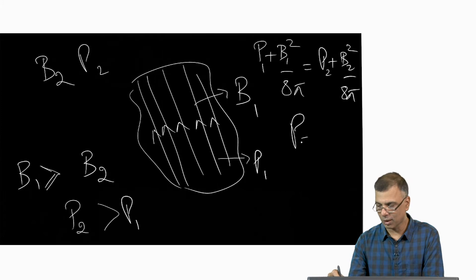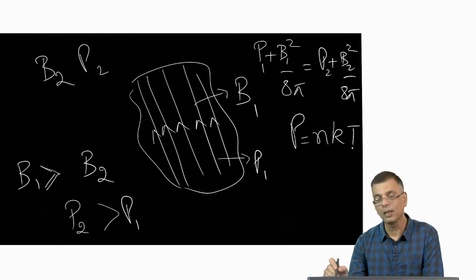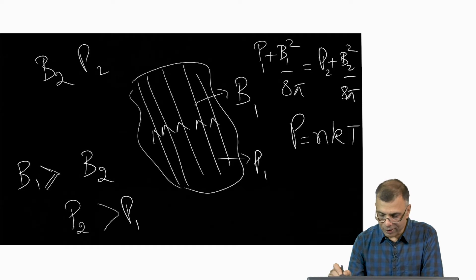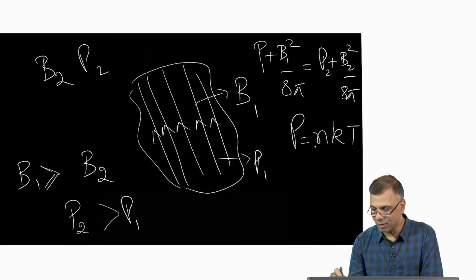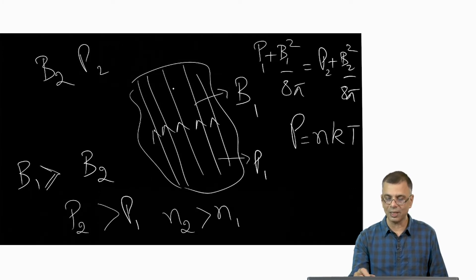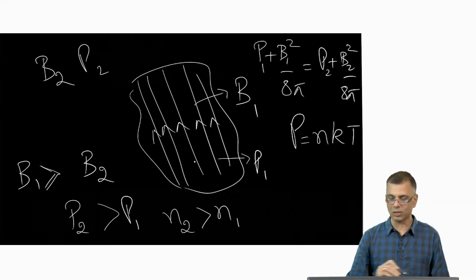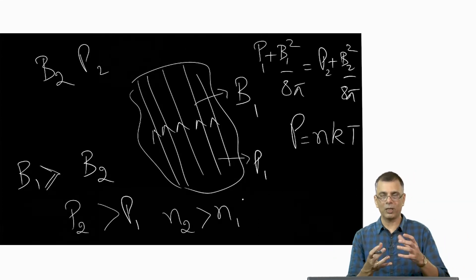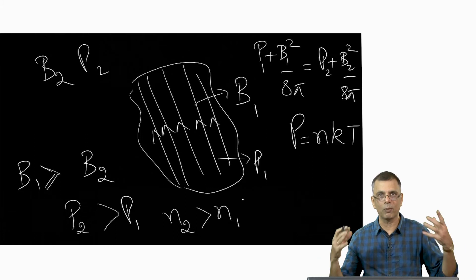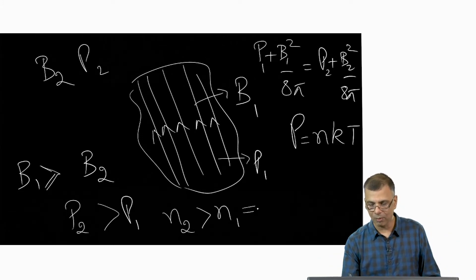P = NkT, where N is the gas density. If the temperature inside and outside are the same, then the only way P2 can be greater than P1 is if N2 is greater than N1. In other words, the gas density inside is lower than the gas density outside. When you have a low density bubble inside a relatively high density fluid, the low density bubble is subject to buoyant forces — this leads to buoyancy.